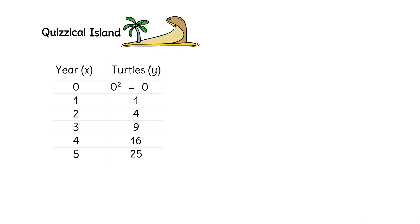Zero squared is zero, one squared is one, two squared is four, and so on. So how many turtles would we have after ten years? Ten squared is a hundred turtles.